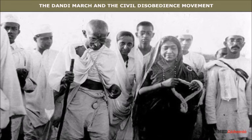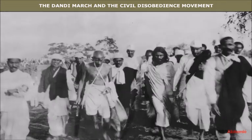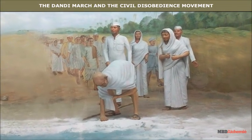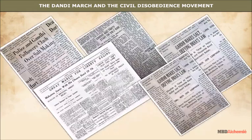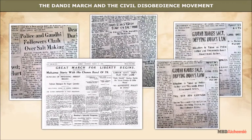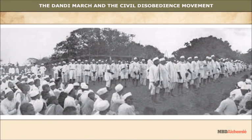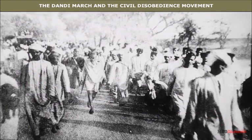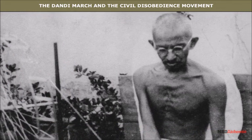The Dandi March and the Civil Disobedience Movement: On March 12, 1930, with a group of 78 followers, Gandhiji made the famous march to Dandi to violate the salt law. On April 6, Gandhiji reached Dandi and ceremonially violated the law by manufacturing salt by boiling sea water. Thousands throughout the country broke the salt law by manufacturing salt and demonstrating in front of government salt factories. Young people boycotted schools, rural people were incited to refuse to pay rent or tax, and there were attempts to prevent the sale of British goods — particularly British clothes. Boycotting of foreign goods and picketing of liquor shops spread all over the country.